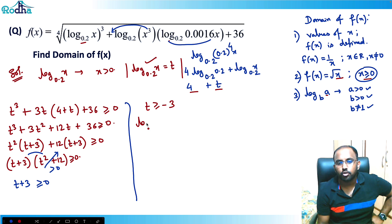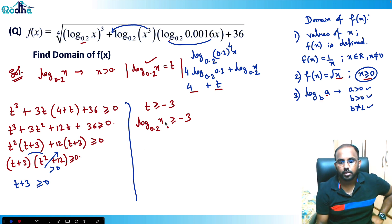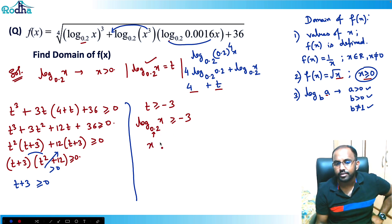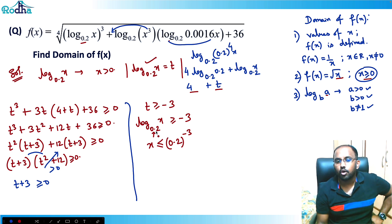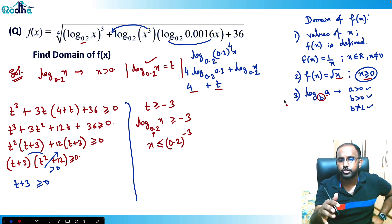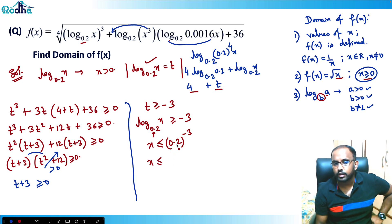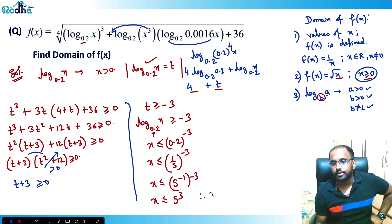Since t = log(x, base 0.2), we have log(x, base 0.2) ≥ −3. Because the base 0.2 is between 0 and 1, taking 0.2 to the other side reverses the inequality: x ≤ 0.2^(−3). Now 0.2 = 1/5, so 0.2^(−3) = 5³ = 125. Therefore x ≤ 125.